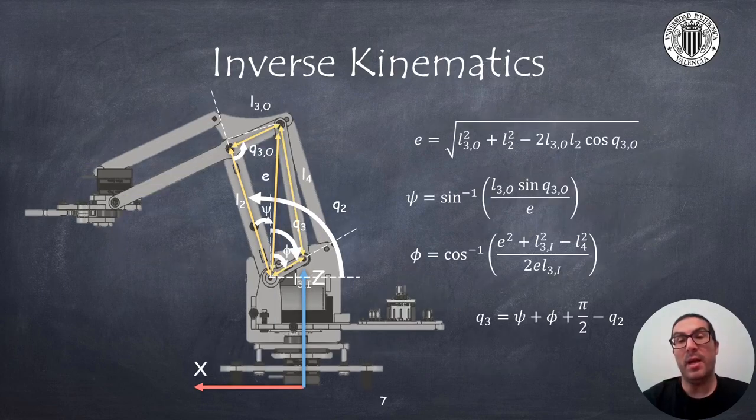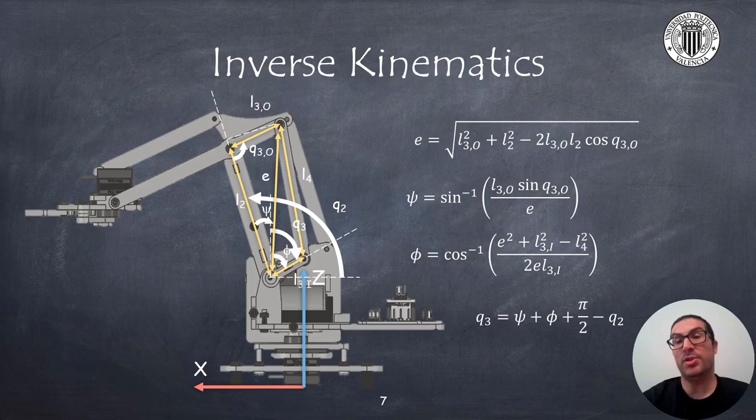Finally, in order to compute the joint angle q3 from the previous values q2 and q3o, we need again to use the cosine theorem. We can compute the distance e which corresponds to the diagonal shown in the figure. Once this distance is known, the angle c is obtained from a single trigonometric relationship and also the angle phi which can be computed, again using the cosine theorem which leads us to compute the angle q3 with the linear relationship from the previous computed angles.